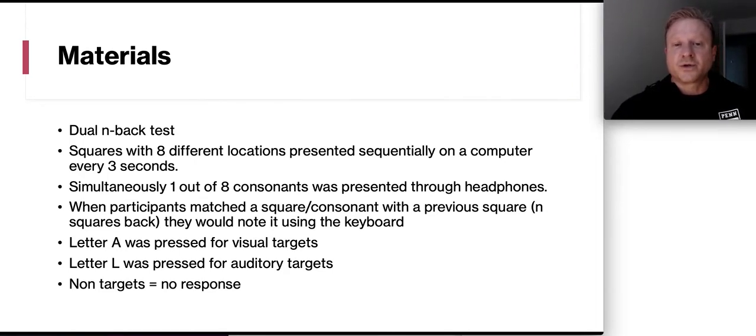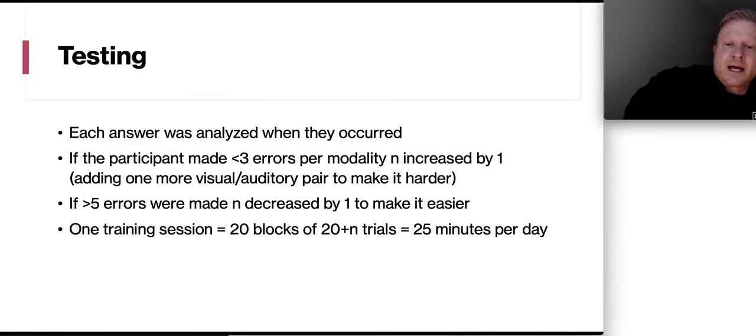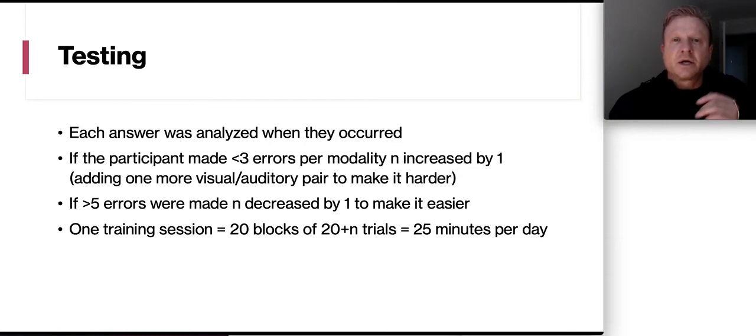So the materials they started out with were the dual N-back test. That was the black box with the letter you had to listen to. The squares had eight different locations that were presented sequentially on a computer every three seconds. And then simultaneously one out of eight consonants was presented through the headphones. If you saw a match, then you would just type on your keyboard an A for a visual target and an L for an auditory. If you didn't see any matches, you just didn't make any responses. Each test answer was analyzed as it occurred. So if the participant made less than three errors per modality, they would add in one more box to make it harder. If they had more than five errors during a modality, then they would decrease it by one to make it easier. So one training session had about 20 blocks and it took about 25 minutes per day to do the training.